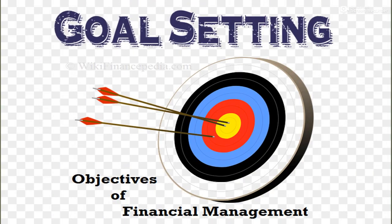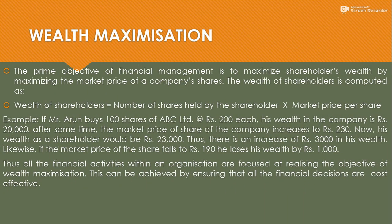Now come to the next topic — objective of financial management. The main objective of financial management is wealth maximization. Wealth maximization means increasing the worth of the shareholder. The prime objective of financial management is to maximize shareholders' wealth by maximizing the market price of the company's shares. The wealth of a shareholder is computed as: number of shares held by the shareholder multiplied by the market price per share. This formula is very important for one-mark questions.